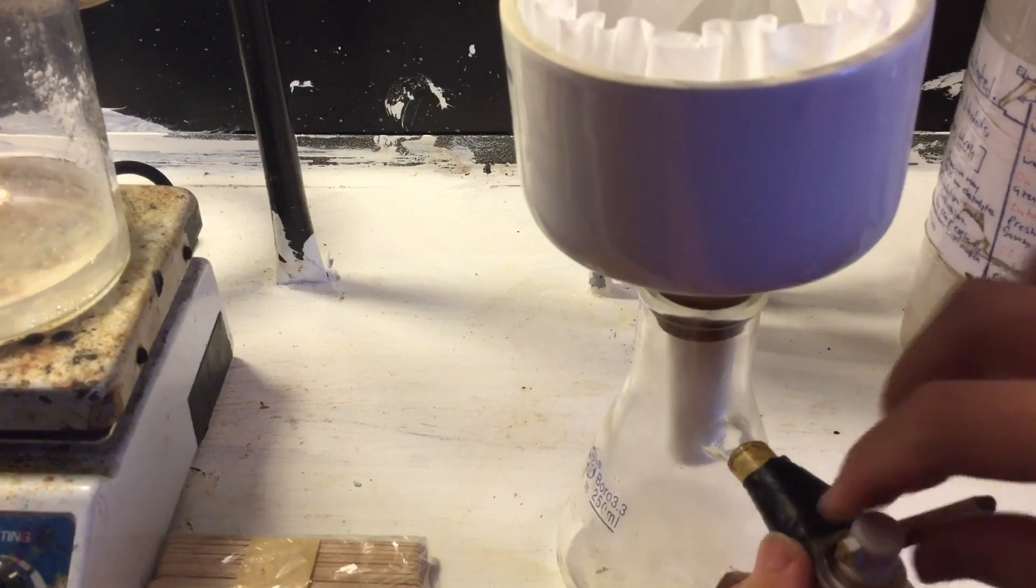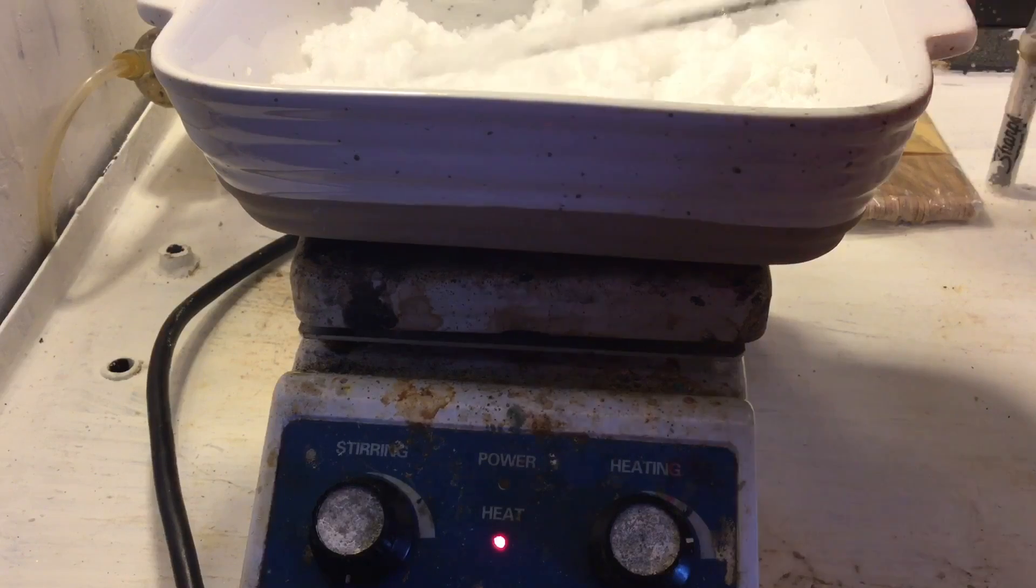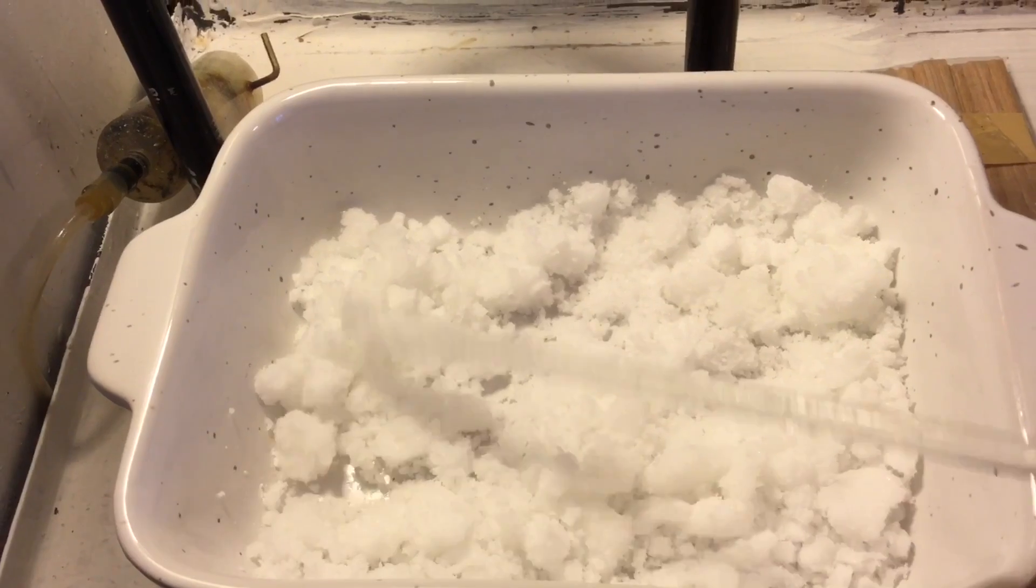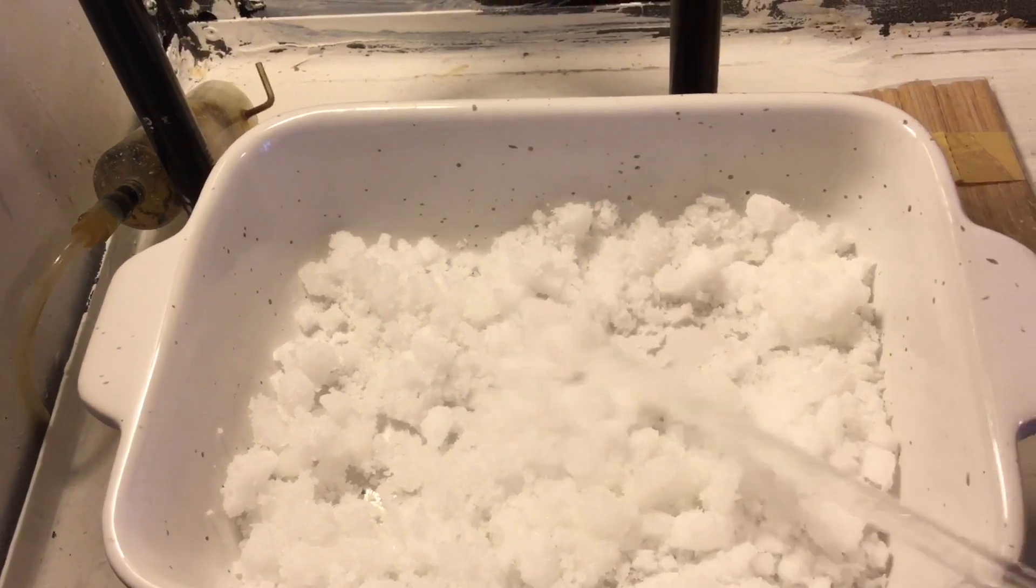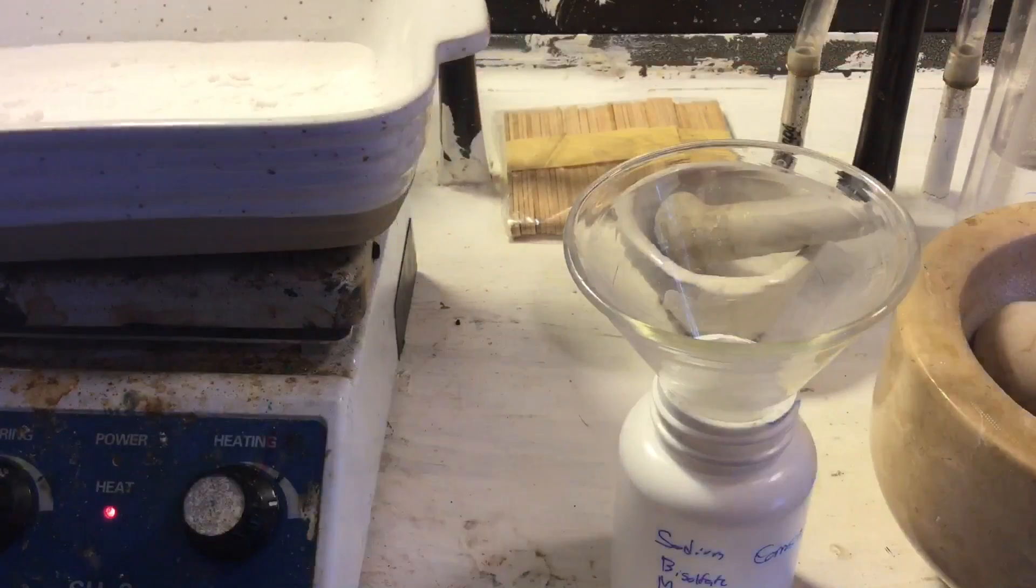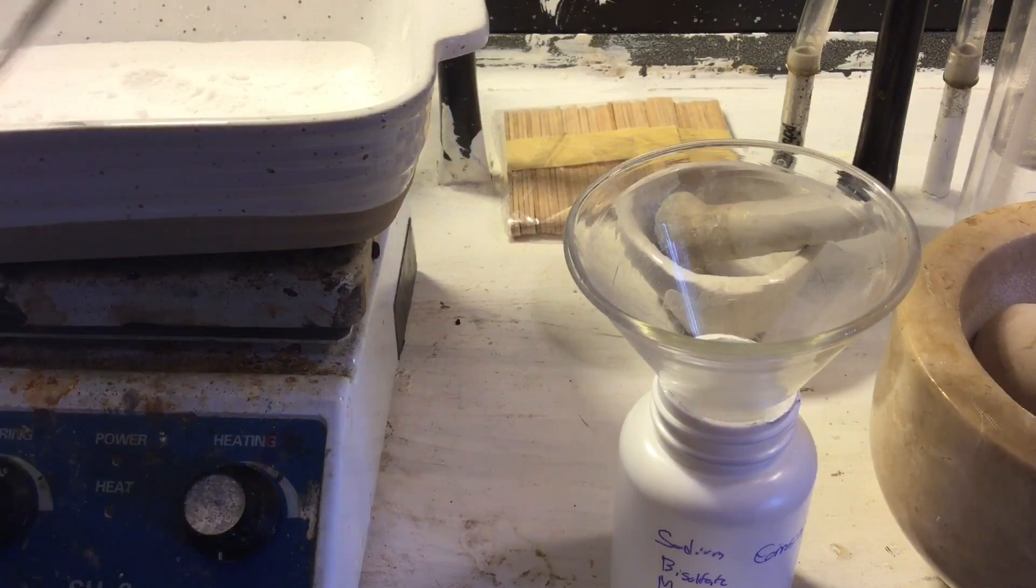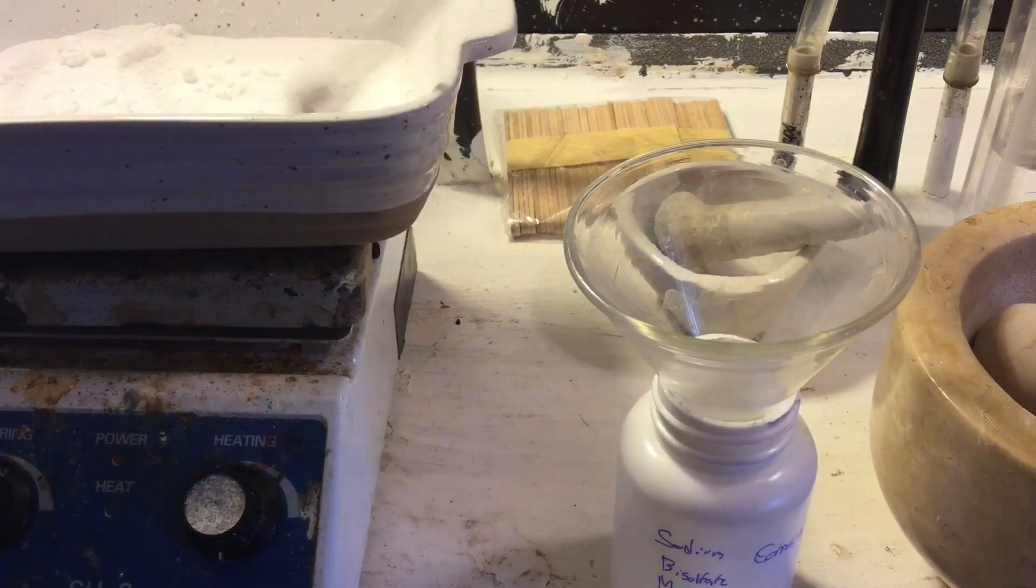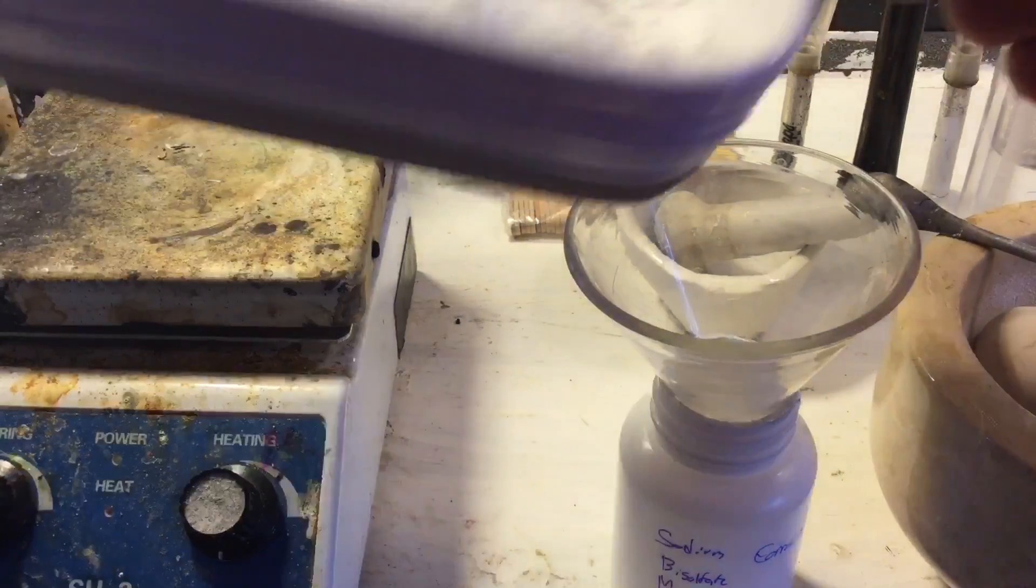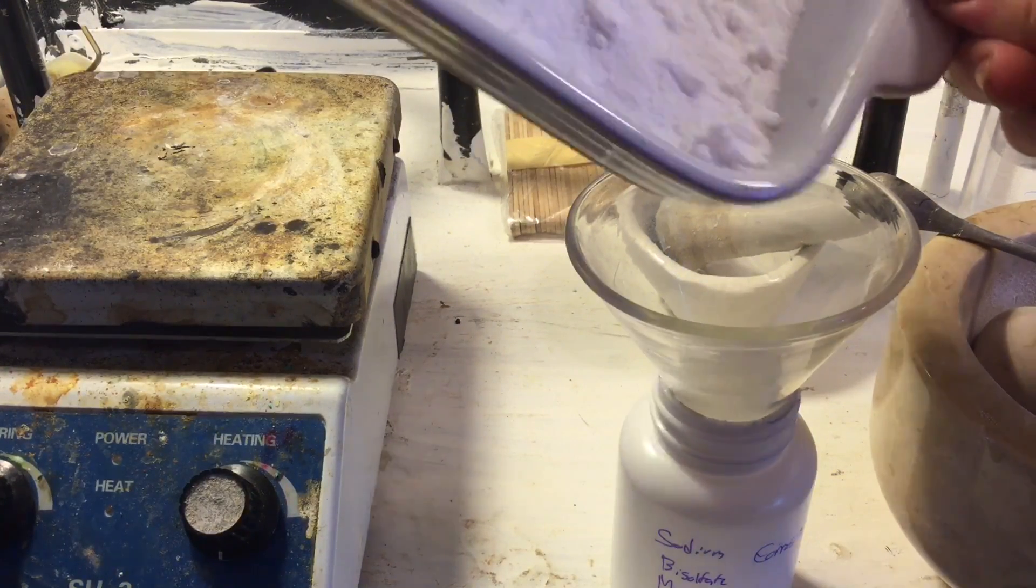Here's our sodium bisulfate drying on the hot plate. Be careful not to decompose it. I doubt your hot plate can reach like 400 Celsius, but just be wary that it may decompose. It also releases HCl fumes during this step as well, because it's wet with some HCl. Here's your nice dry and fine free-flowing powder, although it's still sort of fuming HCl, but not much.